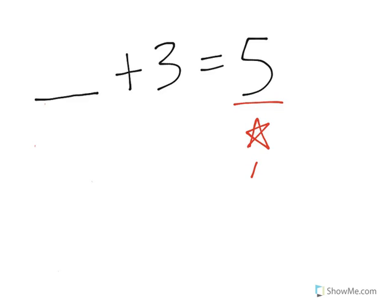Sometimes you might have a problem like this. Blank plus 3 equals 5. Now here we know how many we end up with. We end up with 5 stars or whatever the object may be. We end up with 5 of them. There are 5.